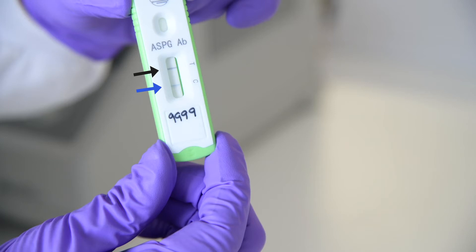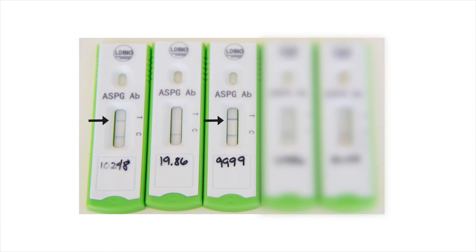So a positive test will show two lines, a black T and a blue C in the corresponding areas. Every T line must be considered positive, even if it has a weak intensity. For very weak lines, make the reading with the eye vertically above the reading area.